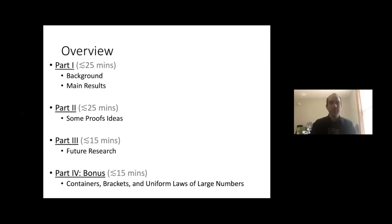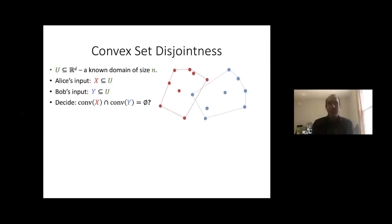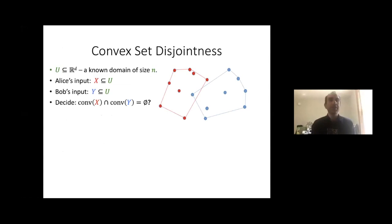We study the following communication complexity problem, which we call Convex Set Disjointness. We assume there is a fixed domain called U, which is a finite subset of R^d, the Euclidean d-dimensional space. The inputs of each player are subsets of U: Alice gets input X, Bob's input is called Y, and their goal is to decide whether the convex hulls of their inputs intersect or not.